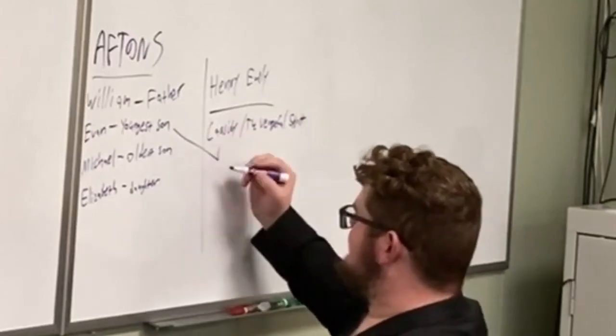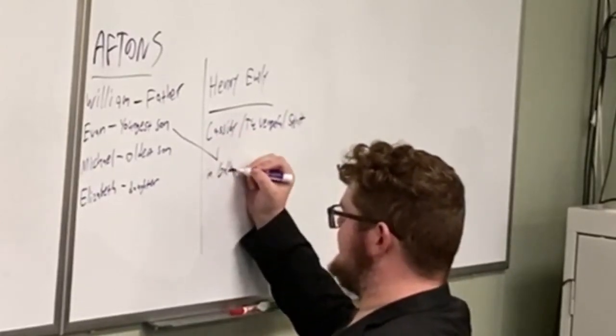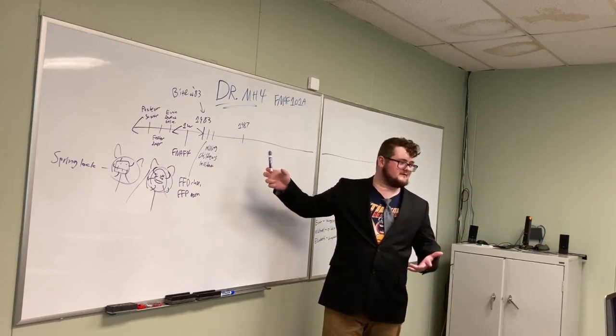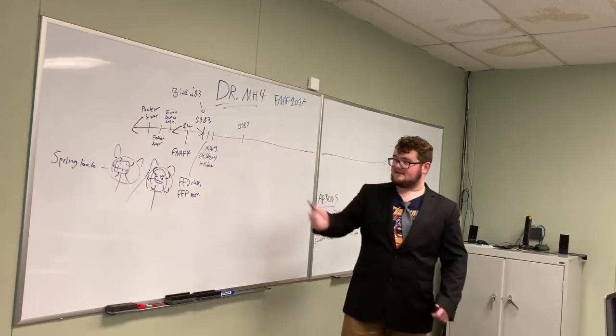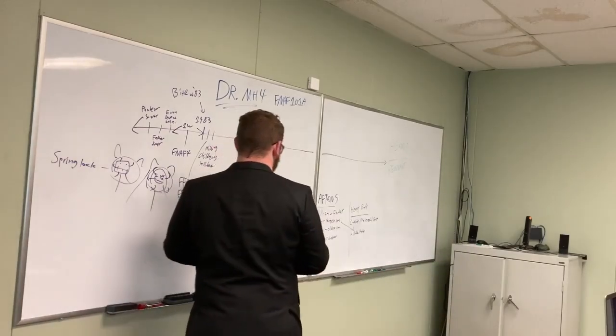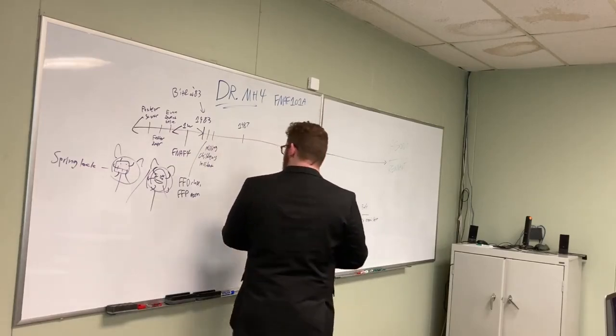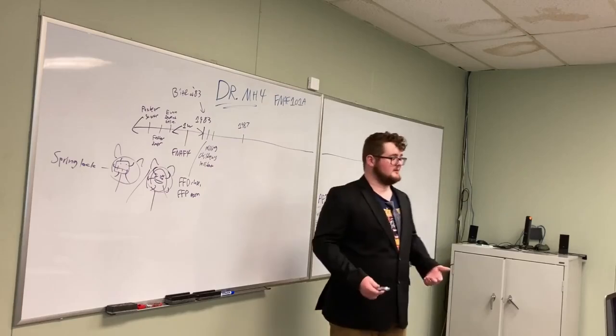And so, both Cassidy and Evan are possessing Golden Freddy. Some more stuff happens. It's very, like, not super clear what happens in between 1983 and 1987. But William keeps making animatronics. William and Henry keep building their business. At some point, Henry figures out what is going on. The police never catch William for his crimes.